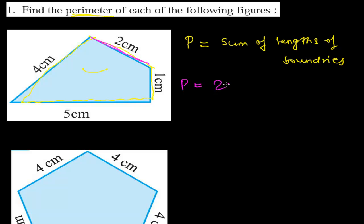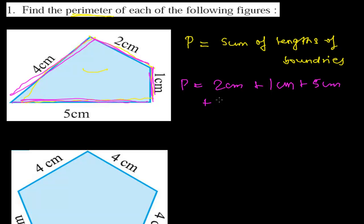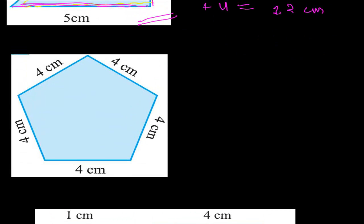The first side is 2 centimeters, the second side is 1 centimeter, the third side is 5 centimeters, and the fourth side is 4 centimeters. So the sum: 2 plus 1 is 3, plus 5 is 8, plus 4 is 12. So 12 centimeters is the perimeter of this figure.